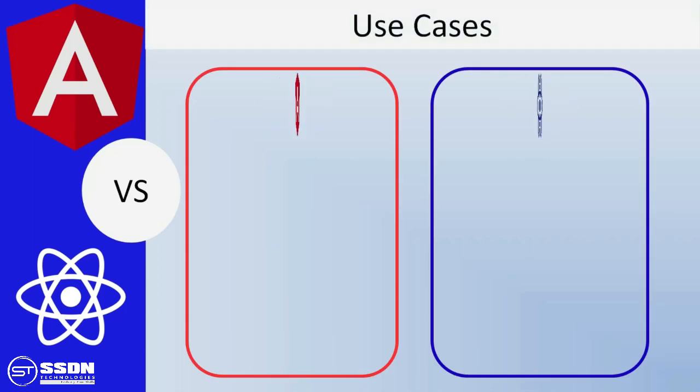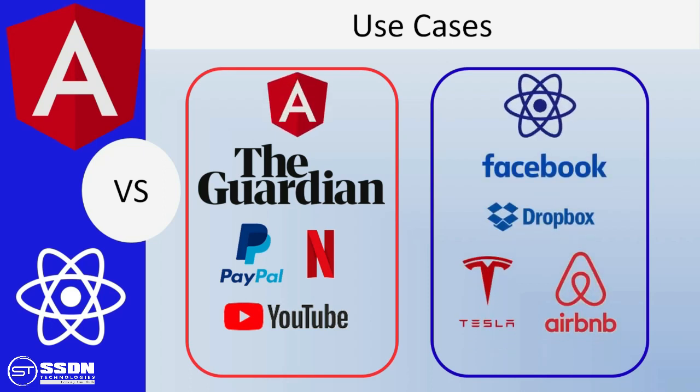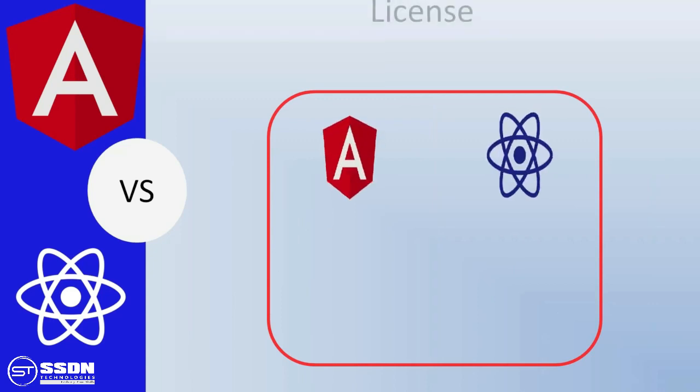The use cases of Angular are the Guardian, PayPal, Netflix and YouTube. The websites built on React are Facebook, Dropbox, Tesla and Airbnb.